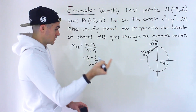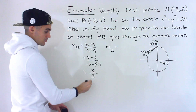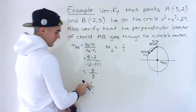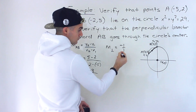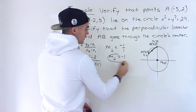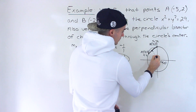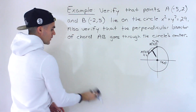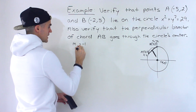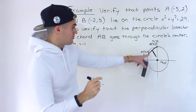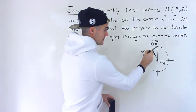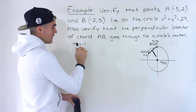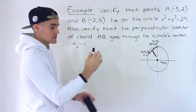The slope of the perpendicular bisector is the negative reciprocal of the chord's slope. The chord slope is 1 over 1, so flipped it's still 1 over 1, but since the original was positive, it becomes negative. So the slope of the perpendicular bisector is negative 1. We're finding the equation of this perpendicular bisector line.